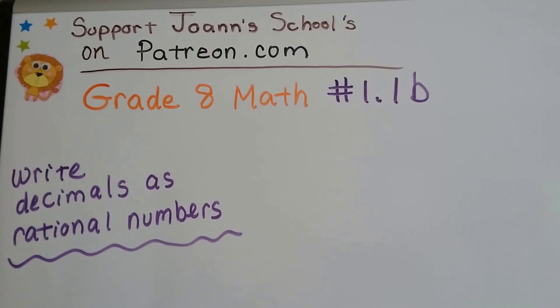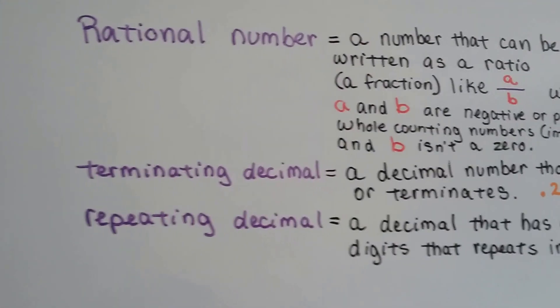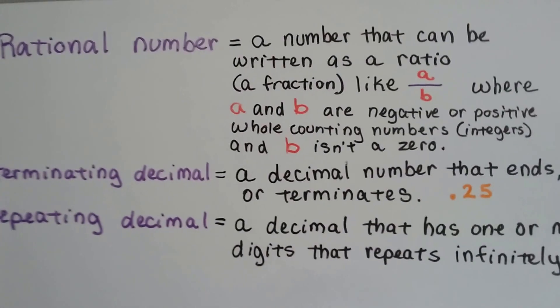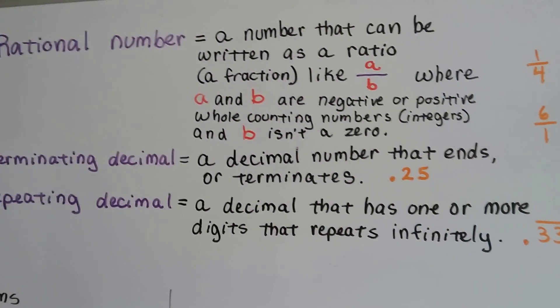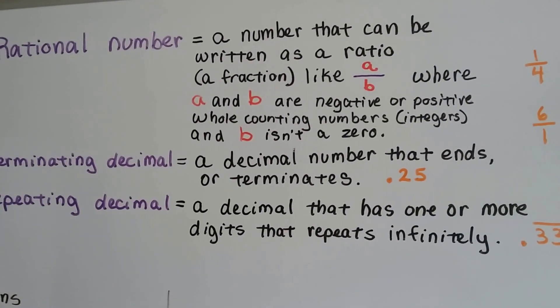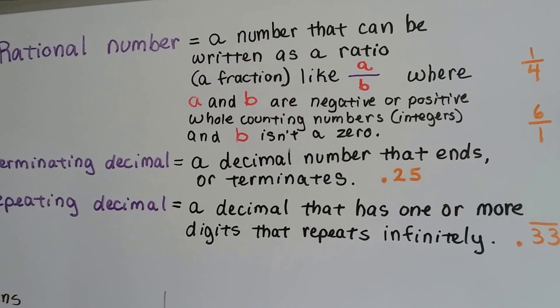Grade 8 math number 1.1b: write decimals as rational numbers. As we said in the last video, a rational number is a number that can be written like a ratio, a fraction, like a over b, where a and b are negative or positive whole counting numbers, they're integers, and b isn't a zero.